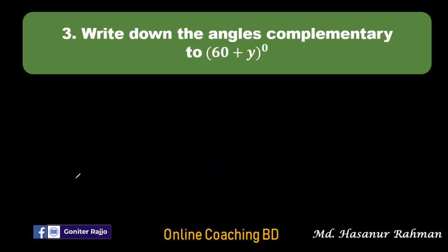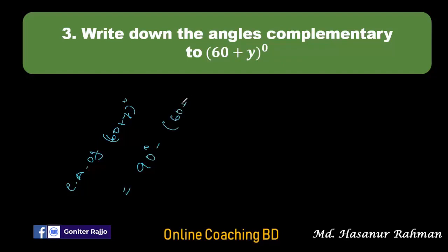Now number three says write down the angles complementary to (60 + y) degrees. Complementary angle means the summation of two angles is 90 degrees. That means we have to subtract (60 + y) degrees from 90 degrees. So complementary angle of (60 + y) degrees will be 90 degrees minus 60 degrees minus y degrees, and the answer is 30 degrees minus y degrees.